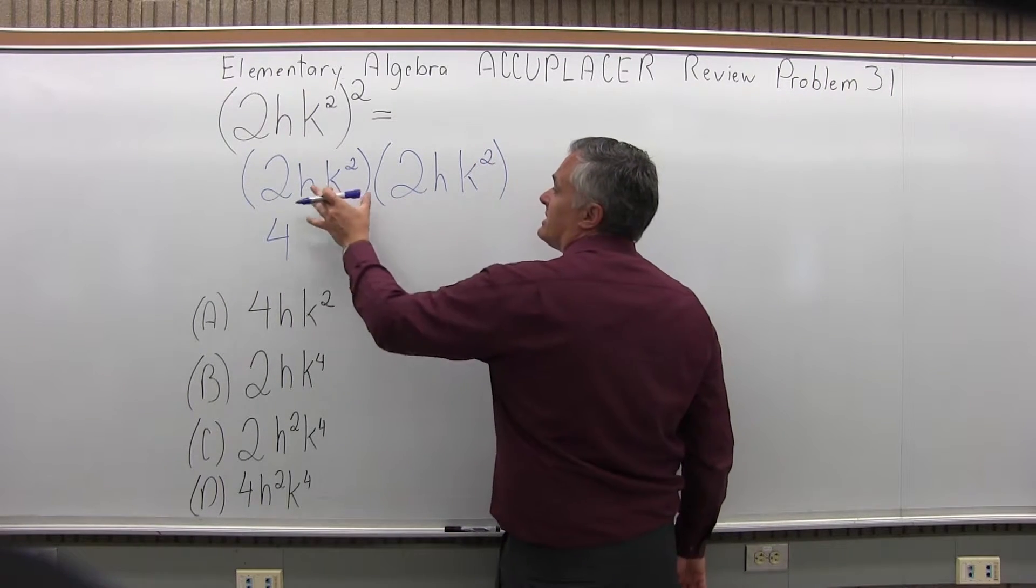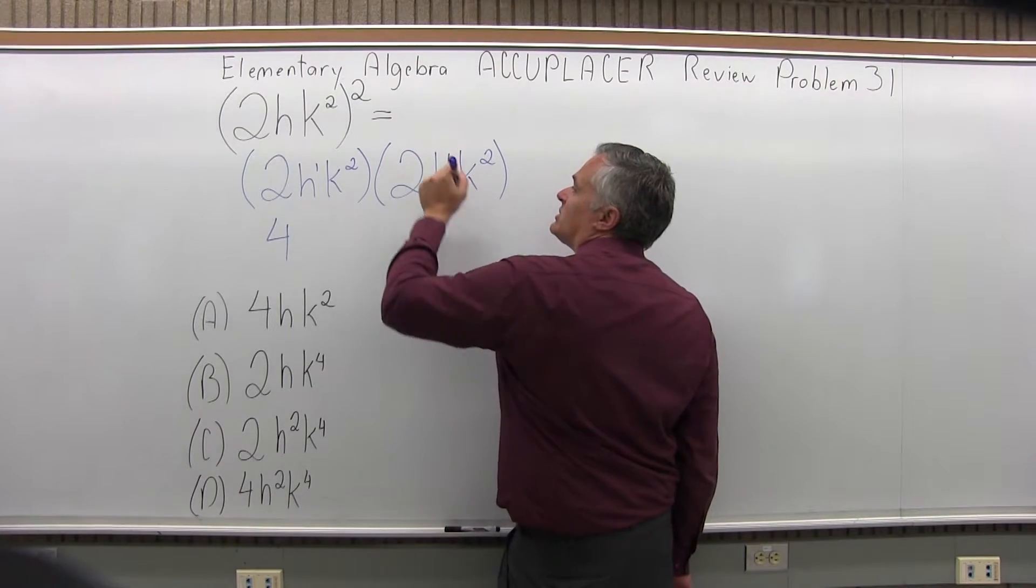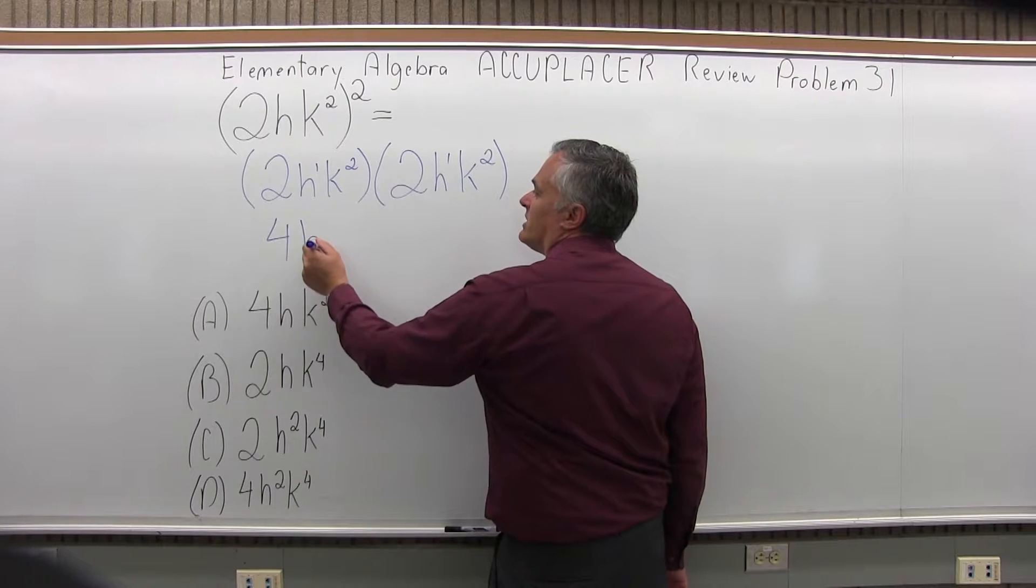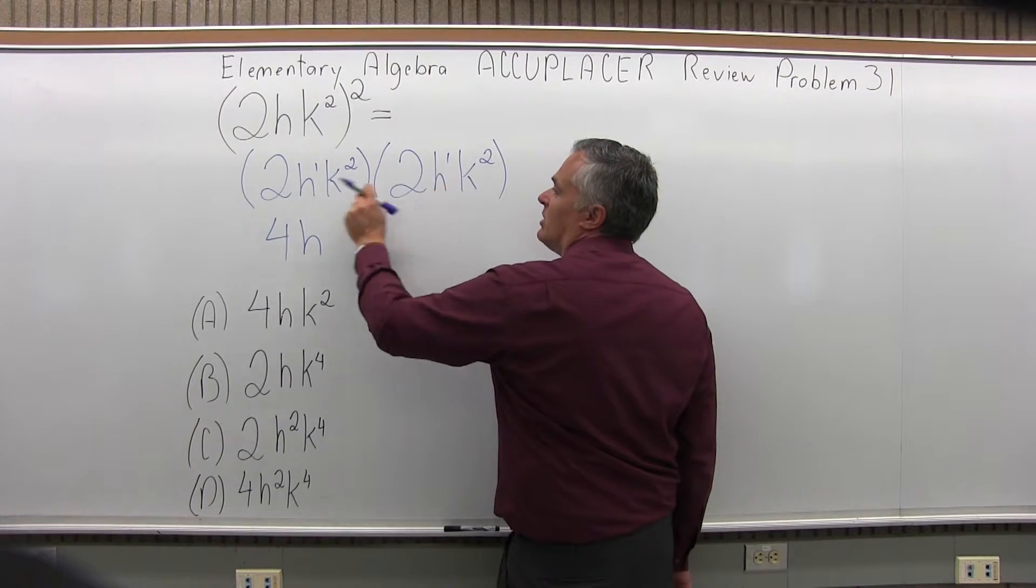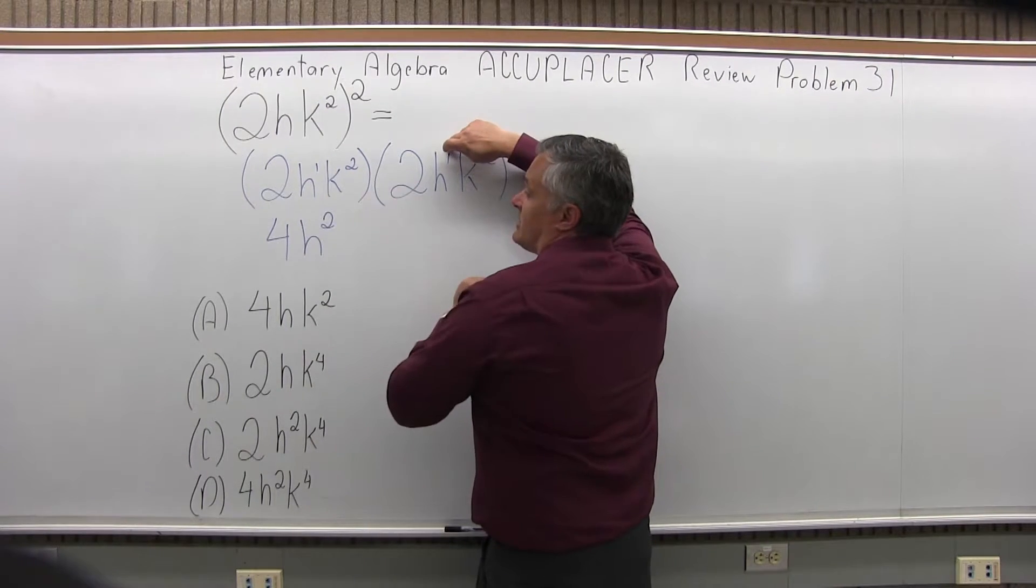Now with the H's, there's no exponent written. You can assume it's a first power for the exponent. So I have H to the first times H to the first, and when you're multiplying something with the same base, you add the exponent. So 1 plus 1 gives me H to the second.